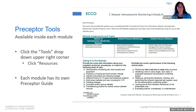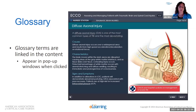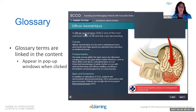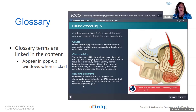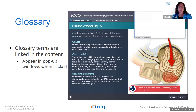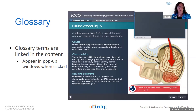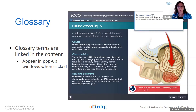The glossary terms are linked in the content. You can see 'diffuse axonal injury' is a glossary term — when clicked, it comes up and the learner can quickly see the definition. There's another one at the bottom: 'intracranial pressure.' Whenever you see an underlined word in ECHO, it's linked in the glossary and provides a little extra information. This is a new addition in the latest update to ECHO.